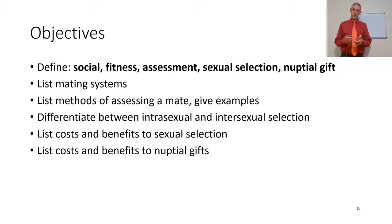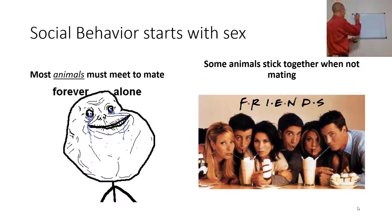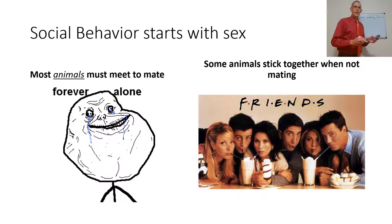So social behavior starts with, well, sex — mating, social life. Most animals must meet to mate. As you saw, there's a plant that doesn't need to meet a different organism of the same species to mate; it can be forever alone.